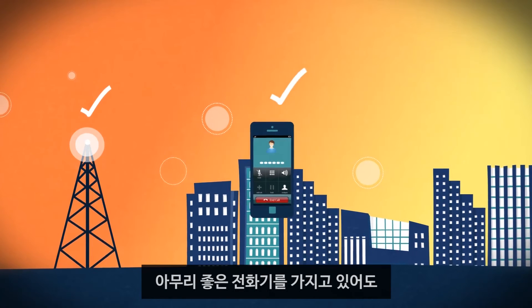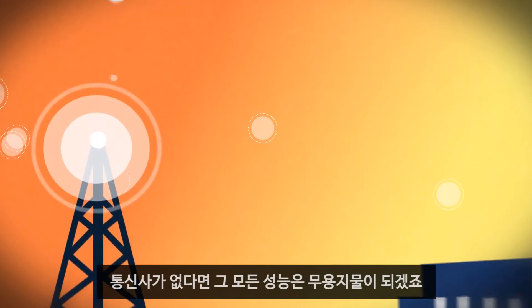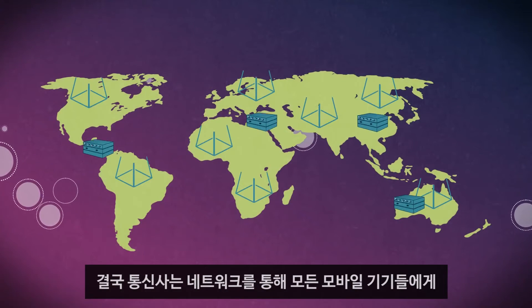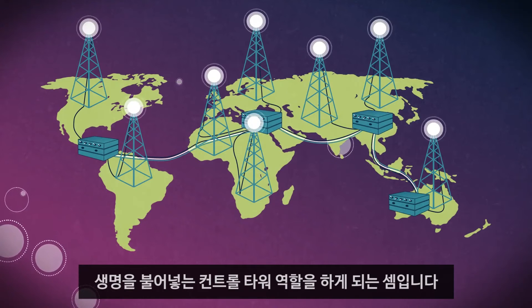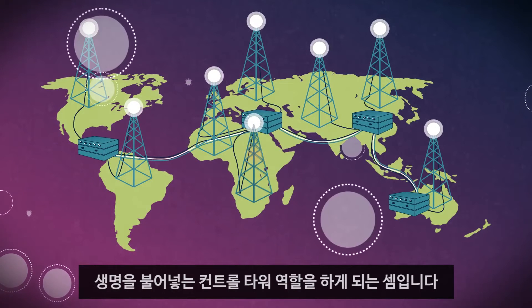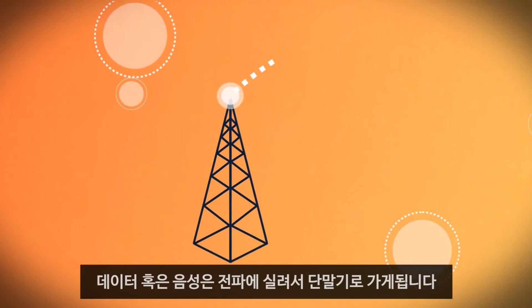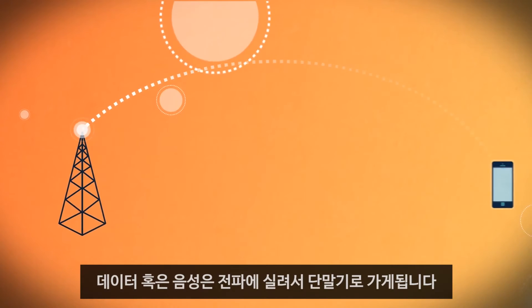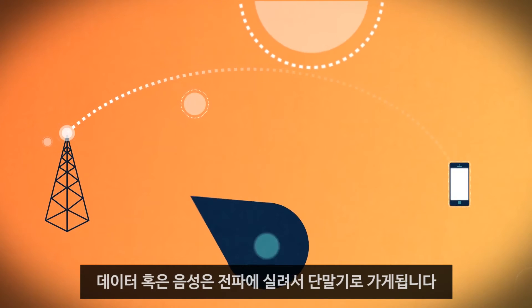Let's be clear: with all the amazing things that smartphones can do, none of it would be possible without carriers. They are the companies that own and manage the networks and the towers, or base stations, that keep them running. When data or voice leaves the tower, it's embedded in a radio wave, which creates a signal the phone can pick up.